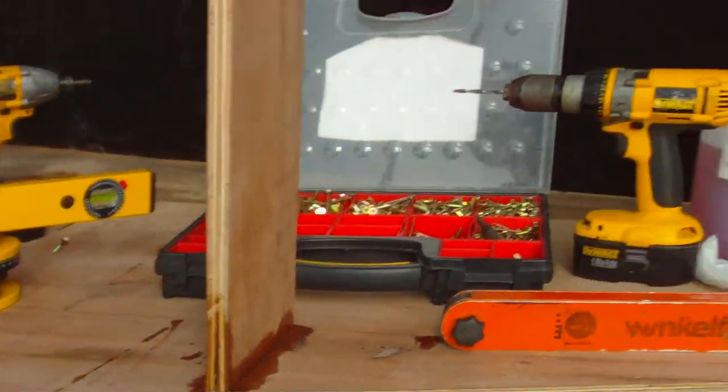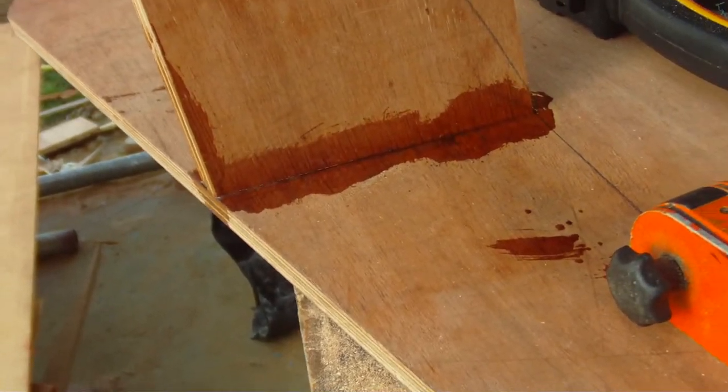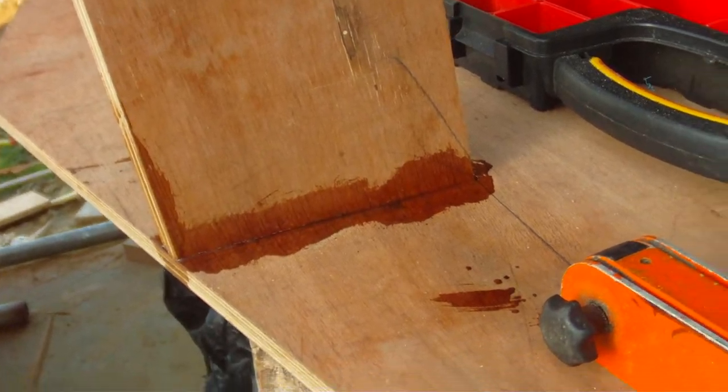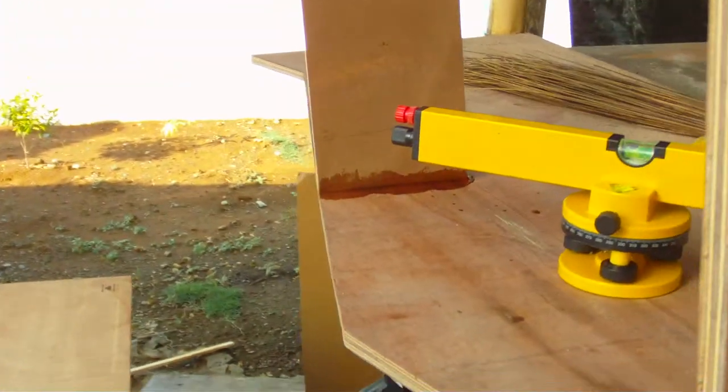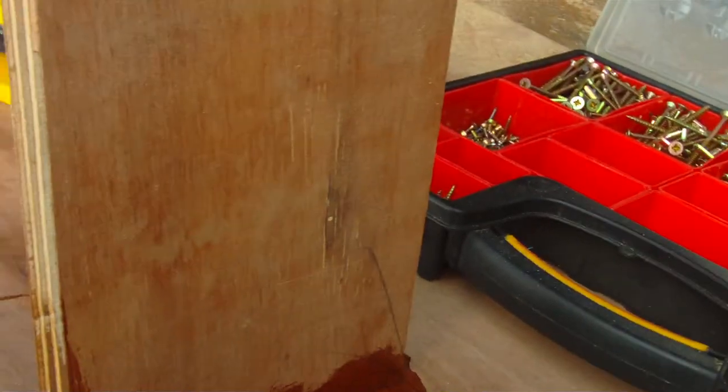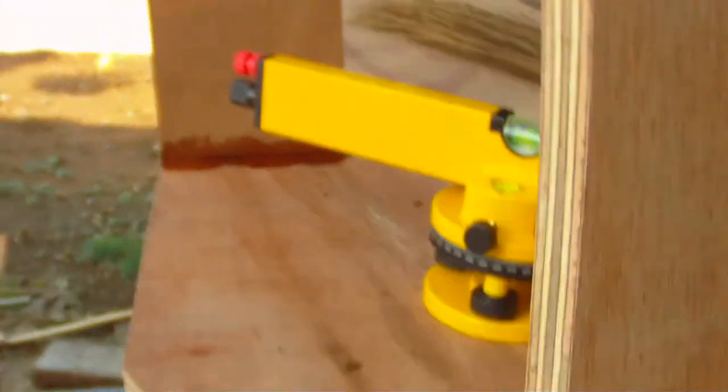I've cut those two angled pieces. I want the transom on a 6-degree slope, sloping back 6 degrees, which is about ideal for the outboard. So I'll just, with a saw, angle those to fit the angle on the bottom of the boat, on the bottom of the hull.